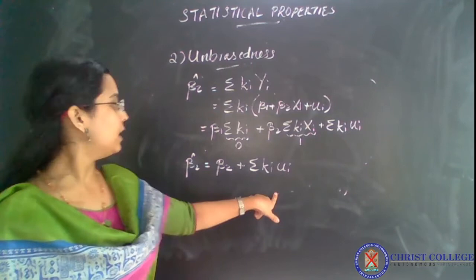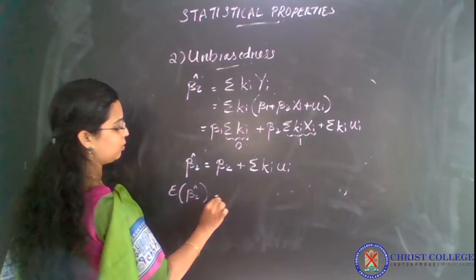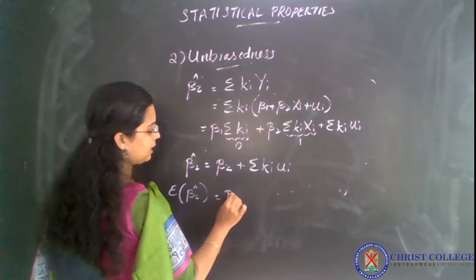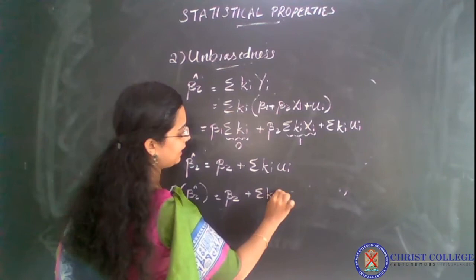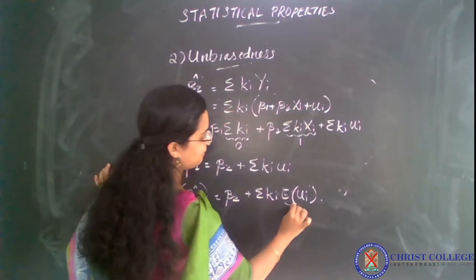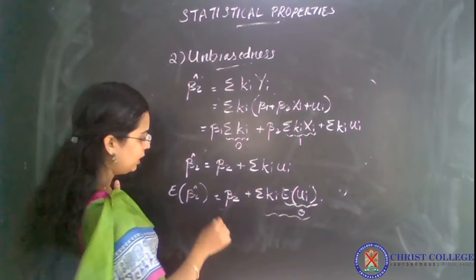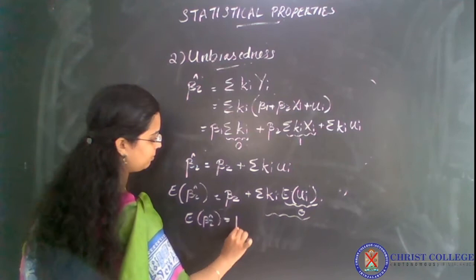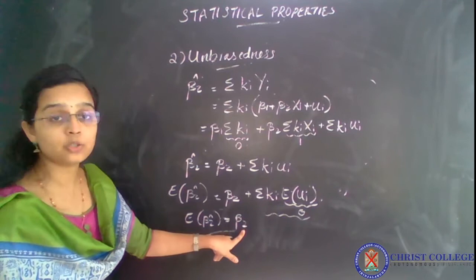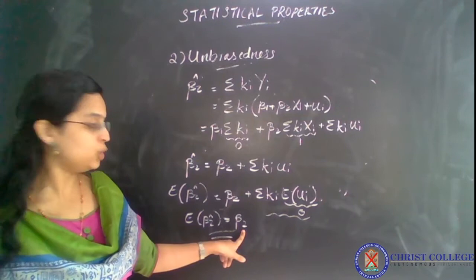So beta 2 hat equals beta 2 plus sigma k_i u_i. Taking expectation on both sides: expectation of beta 2 hat equals beta 2, which is a constant parameter, plus sigma k_i times expectation of u_i. We know that expectation of u_i equals 0, so this whole term becomes 0. Therefore, expectation of beta 2 hat is equal to beta 2 — that is, the expected value of the estimator equals the actual value. We have proved the unbiased nature of beta 2 hat.